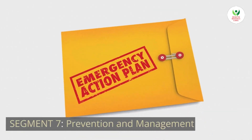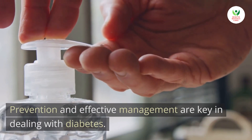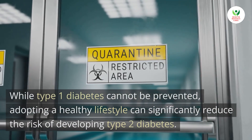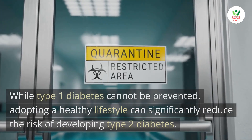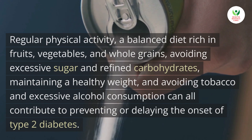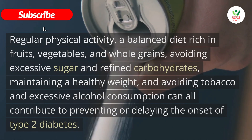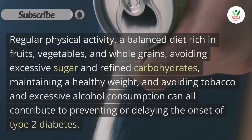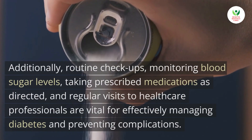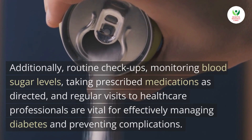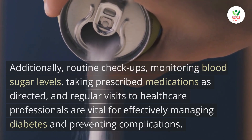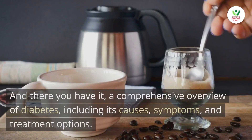Prevention and management: while Type 1 diabetes cannot be prevented, adopting a healthy lifestyle can significantly reduce the risk of developing Type 2 diabetes. Regular physical activity, a balanced diet rich in fruits, vegetables, and whole grains, avoiding excessive sugar and refined carbohydrates, maintaining a healthy weight, and avoiding tobacco and excessive alcohol can all help prevent or delay Type 2 diabetes. Routine checkups, monitoring blood sugar levels, taking prescribed medications as directed, and regular visits to healthcare professionals are vital for effectively managing diabetes and preventing complications.